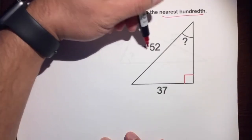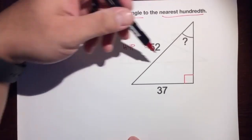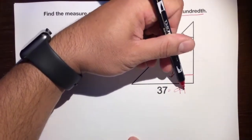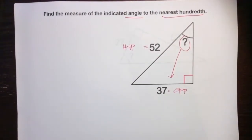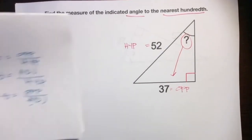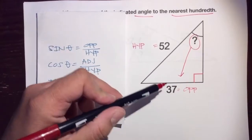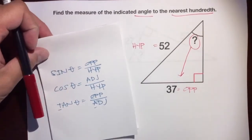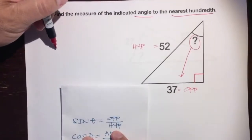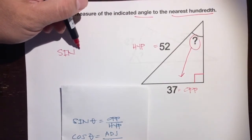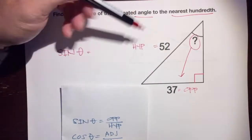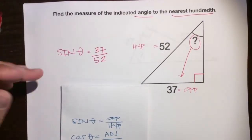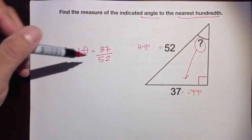The problem gives us 52, which is the hypotenuse, and 37, which is the opposite side of the missing angle. So we have opposite and hypotenuse. Referring back to our notes — opposite over hypotenuse is sine. So we write: sine of theta equals the opposite (37) over the hypotenuse (52).